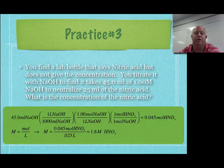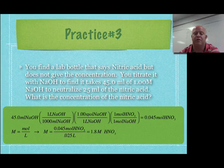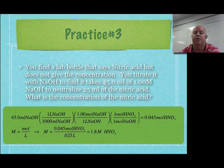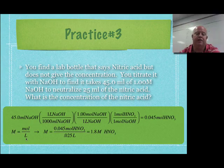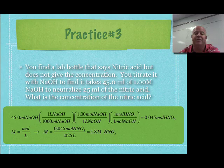Here's the answer. We start with the volume of sodium hydroxide used — 45 milliliters — convert to liters, then use the 1.00 molar concentration to get moles. The mole ratio between nitric acid and sodium hydroxide is 1-to-1 since HNO₃ is a monoprotic acid. That tells us we had 0.045 moles of nitric acid in the solution. We had 25 milliliters of it, so converting to 0.025 liters and dividing moles by liters gives a concentration of 1.8 molar. Titrations are a tool to find concentrations of unknowns.